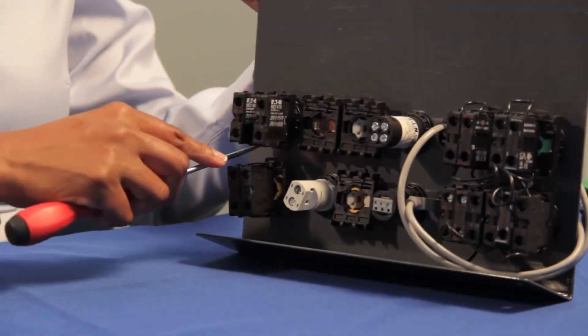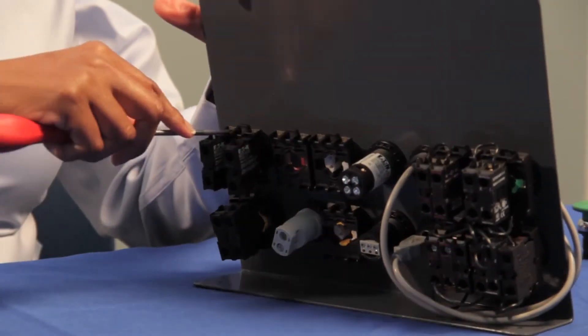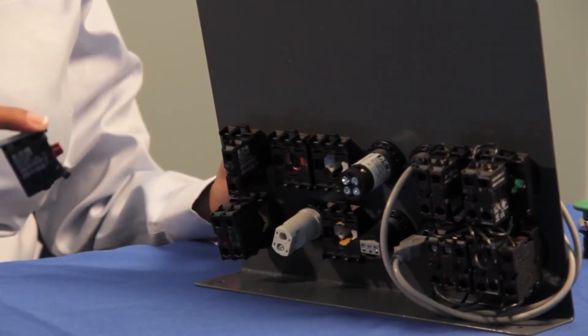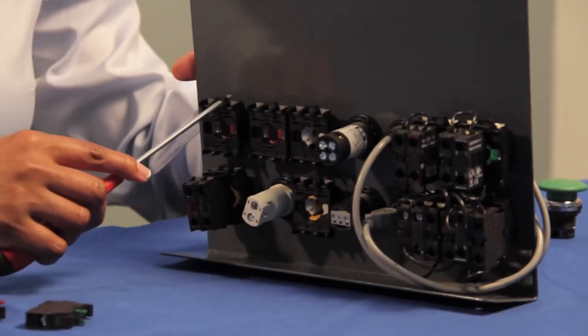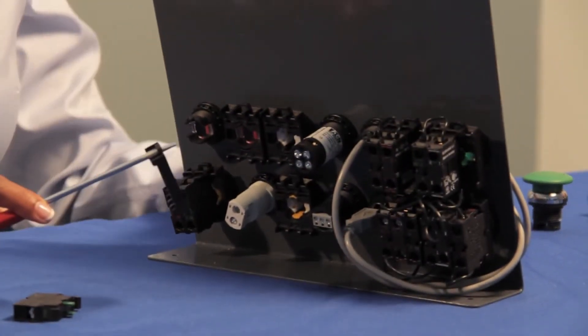To disassemble the contact block use our M22 screwdriver to lift the tabs at the bottom and top. To remove the adapter find the tab with the arrow and lift the adapter with the downward motion towards you.